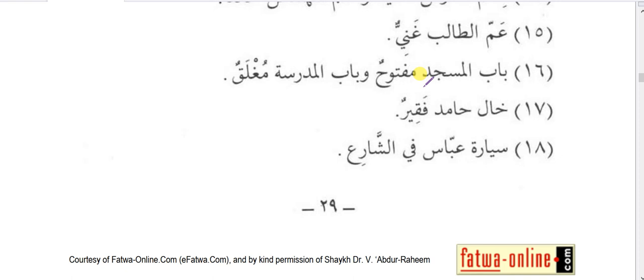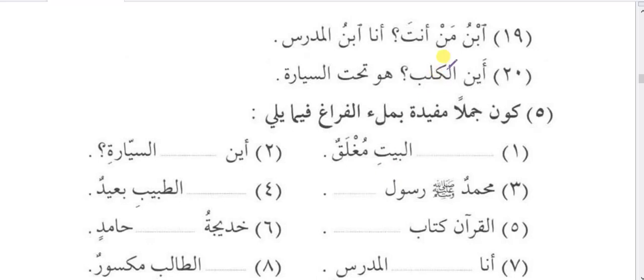More conversational sentences: ibnu man anta — whose son are you? Ana ibnul-mudarrisi — I am the son of the teacher. Ayna al-kalbu — where is the dog? Huwa tahta as-sayyarati — he is under the car. Fill-in-the-blanks exercise answers: babul-bayti mughlaqun — the door of the house is closed; ayna miftahus-sayyarati — where is the key of the car; muhammadun rasoolullahi — Muhammad is the prophet of Allah; baytu at-tabibi ba'idun — the house of the doctor is far; al-Quranu kitabullahi — the Quran is the book of Allah; Khadijatu bintu hamidin — Khadija is the daughter of Hamid; ana ibnul-mudarrisi — I am the son of the teacher; qalamut-talibi maqsoorun — the pen of the student is broken; babul-masjidi maftuhun — the door of the masjid is open; kharaja al-mudarrisu min maktabil-mudiri — the teacher left from the principal's office.